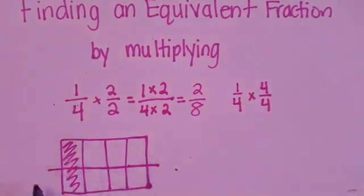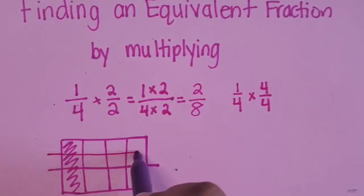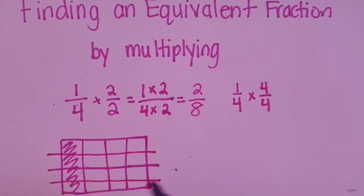So if we took that model again and instead of halves, we have 4ths. We have 4 partitions.